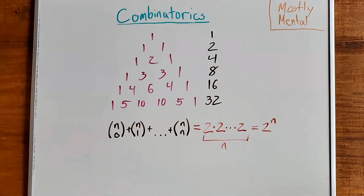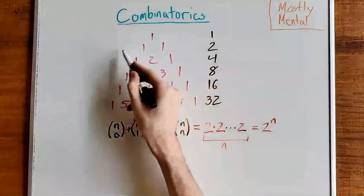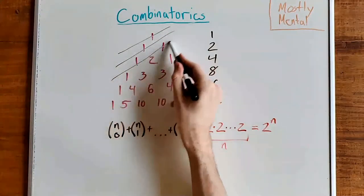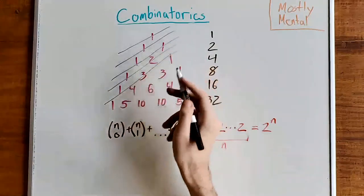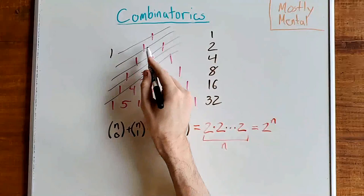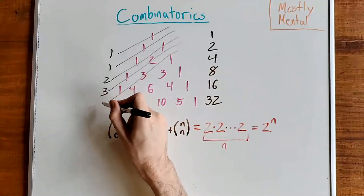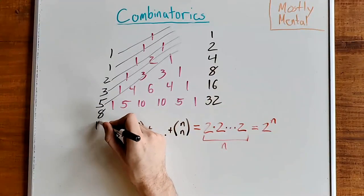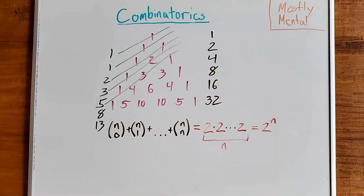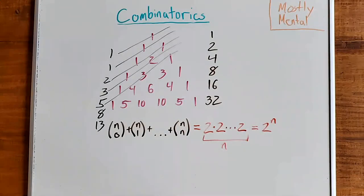Now, instead of summing straight across, what happens if we take sums on a slight diagonal? We get one, one, two, three, five, eight, thirteen — those are the Fibonacci numbers! That's interesting enough to be the subject of a whole second video, so join me next time as we explore the Fibonacci sequence.